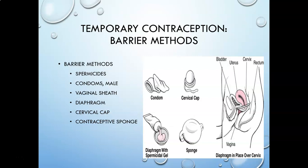Barrier methods are exactly what they sound like — some kind of separation between the vagina and penis so that vaginal fluids and sperm cannot mix. It is recommended all barrier methods be used with a lubricant and a spermicide. Most people think of a condom first; it is one of the most commonly used methods. It's easy to use, relatively inexpensive, over the counter, easy to obtain, and effective when used properly.